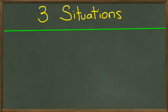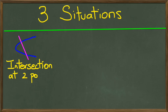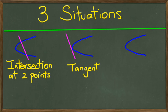So with intersections, there are three situations that could happen. The first one is when you have two intersection points. The second one is when you have it as a tangent. And the third one is when there's no intersection.